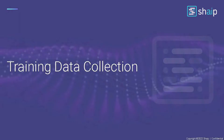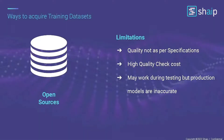We've talked about the different problems the industry and data scientists are facing in terms of data. Now, what are the different solutions out there that people are using today? One of the most common approaches is open source — there are many options like OpenML and ImageNet, which is the largest image dataset available.